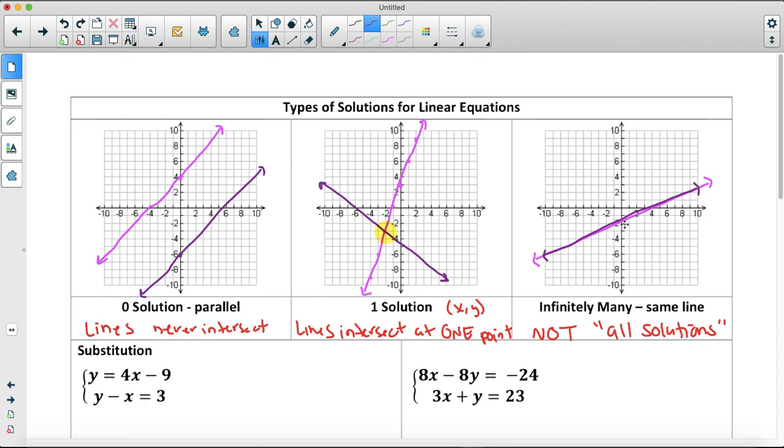But the solution of 0, negative 2 does work. The solution of 6, 1 does work. Any of the solutions that are on the line itself, any coordinate that is on either of these lines, will in fact work. That just means that there are an infinite amount, because the lines will go on forever. All solutions is not accurate, because any coordinate that I pick on here is not necessarily a solution.